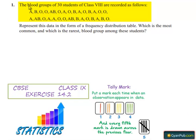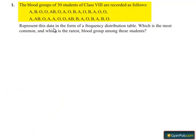In the given problem, the blood groups of 30 students of class 8th are recorded as follows. Here are the blood groups. Represent this data in the form of a frequency distribution table, which is the most common and which is the rarest blood group among these students.